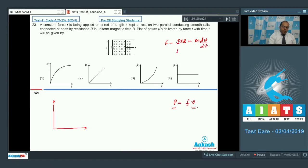And the value of I is equal to VBL by R. So if I find out velocity is a function of time, then the graph is like this. So we can say that option 1 is the correct answer.